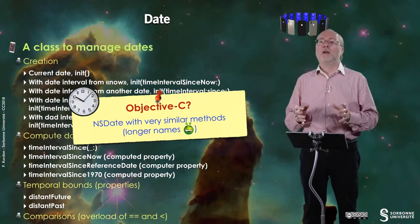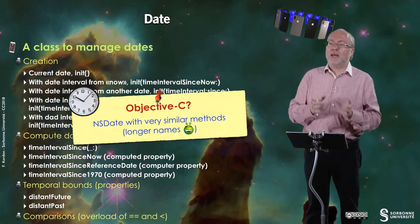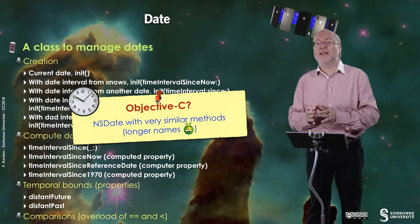In Objective-C, once again, things are very similar. The names of methods are very similar, of course, with a bit longer names. But, the type is then called NSDate instead of date.